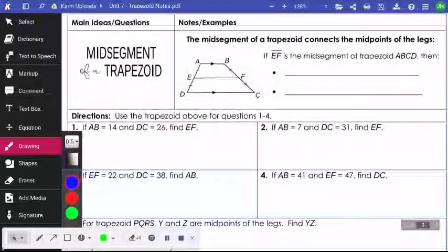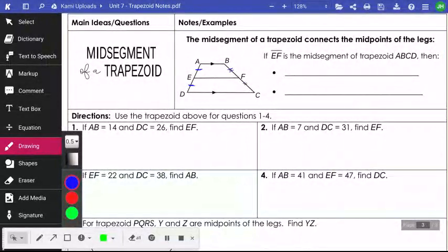So in order for a segment to be a midsegment, it has to split each side, each non-parallel side, into equal parts. So if you see these congruent markings, that's because those are equal sections, and these congruent markings make these equal sections. So it is a midsegment. EF is considered a midsegment if AB is parallel to CD, is parallel to EF, and these are all segments.